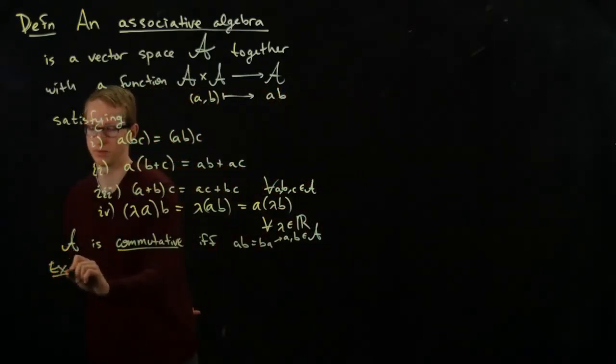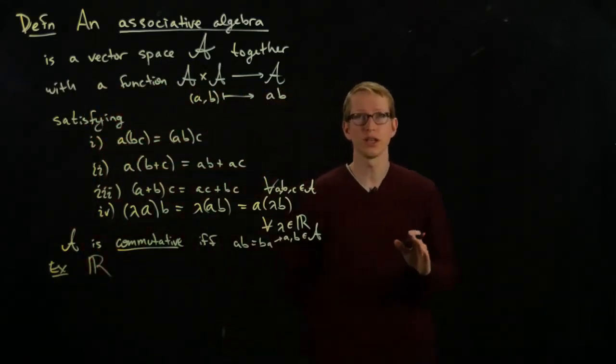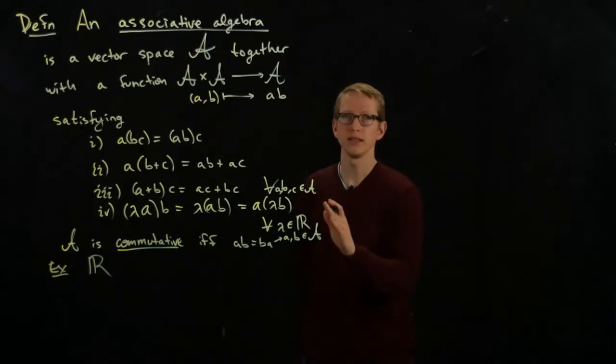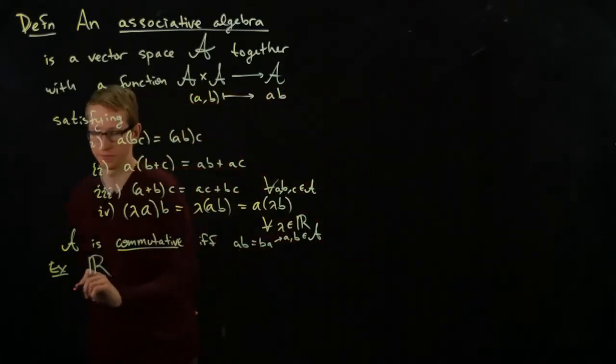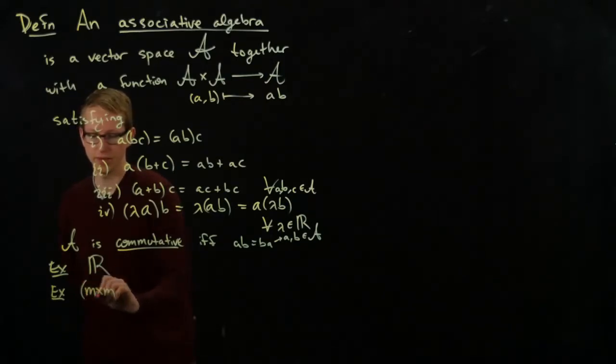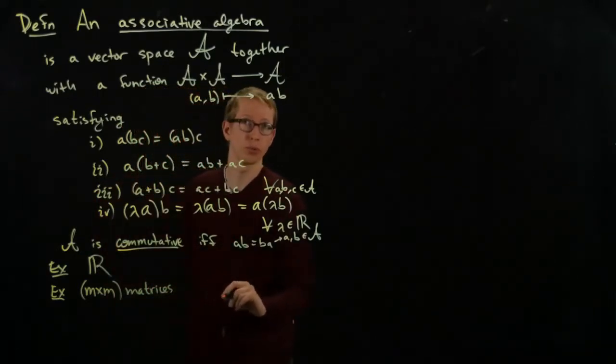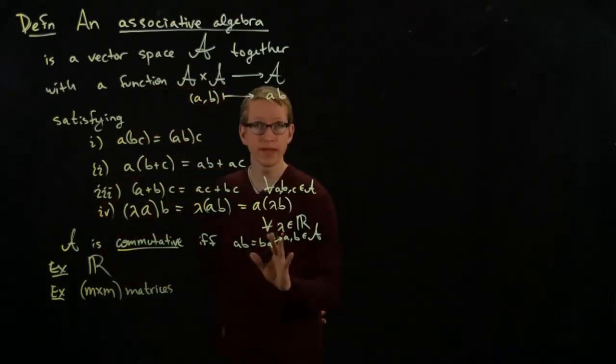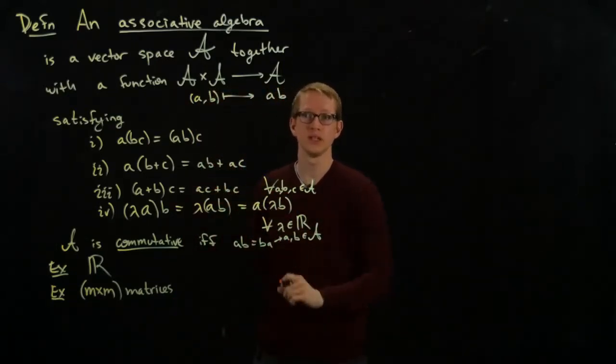So immediately some examples. The set of real numbers under the usual addition and multiplication of real numbers is an associative algebra. In fact, it's a commutative associative algebra. Second is the set of M by M matrices. And the product of matrices is the matrix product of matrices. And you can check that it satisfies all of these conditions.